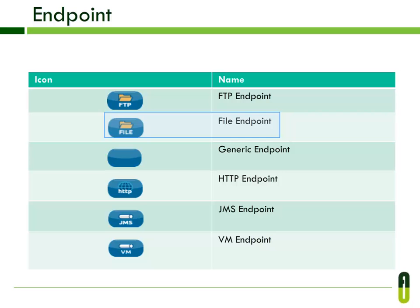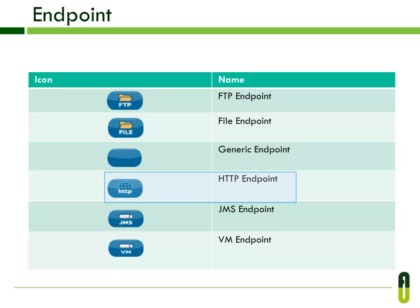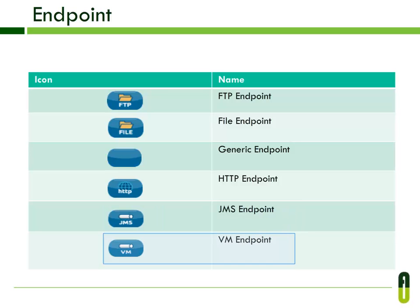The File endpoint reads a file from the file system. The Generic endpoint is used to dynamically configure an endpoint using Mule expressions and specifying paths. The HTTP endpoint processes HTTP requests or responses. The JMS endpoint sends or receives messages from a JMS queue. The VM endpoint is an in-memory queue that allows you to integrate different flows or services in the same Mule config.